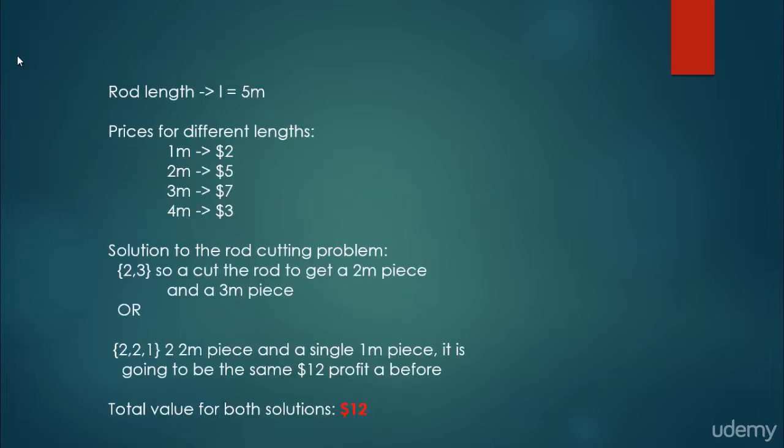For example, we have a rod of length 5 meters and prices for different lengths: 1 meter long is worth $2, 2 meters is $5, 3 meters is $7, and 4 meters is $3. There may be several solutions. For example, cuts of 2 and 3 meters, or two 2-meter pieces and a single 1-meter piece, both yield the same total value of $12.